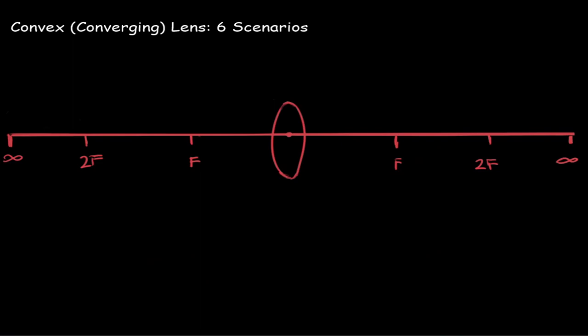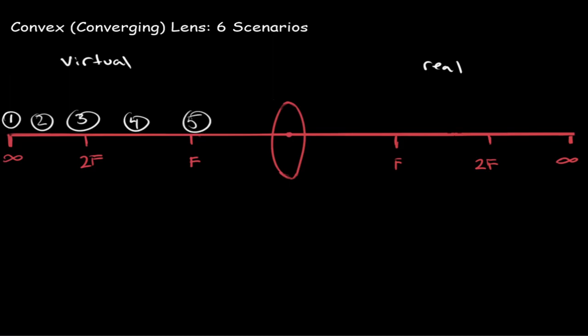Let's first talk about convex or converging lenses. There are going to be six scenarios we need to memorize for a converging lens, and I want to show you a trick to remember five of these really easily. What you need to do is label your f, 2f, and infinity on both sides of the lens. Here we have the virtual side of the lens, and here we have the real side. We draw one at infinity, two in between infinity and 2f, three at 2f, four in between 2f and f, and five at f, which is the focal point.